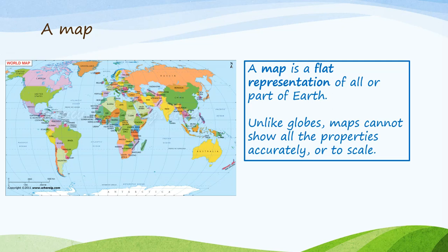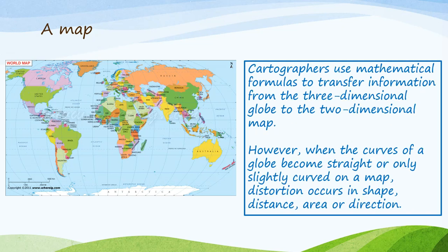A map is a flat representation of all or part of the earth. Unlike globes, maps cannot show all the properties accurately or to scale. Cartographers use mathematical formulas to transfer information from the three-dimensional globe to the two-dimensional map. However, when the curves of a globe become straight or only slightly curved on a map, distortion occurs in shape, distance, area or direction.